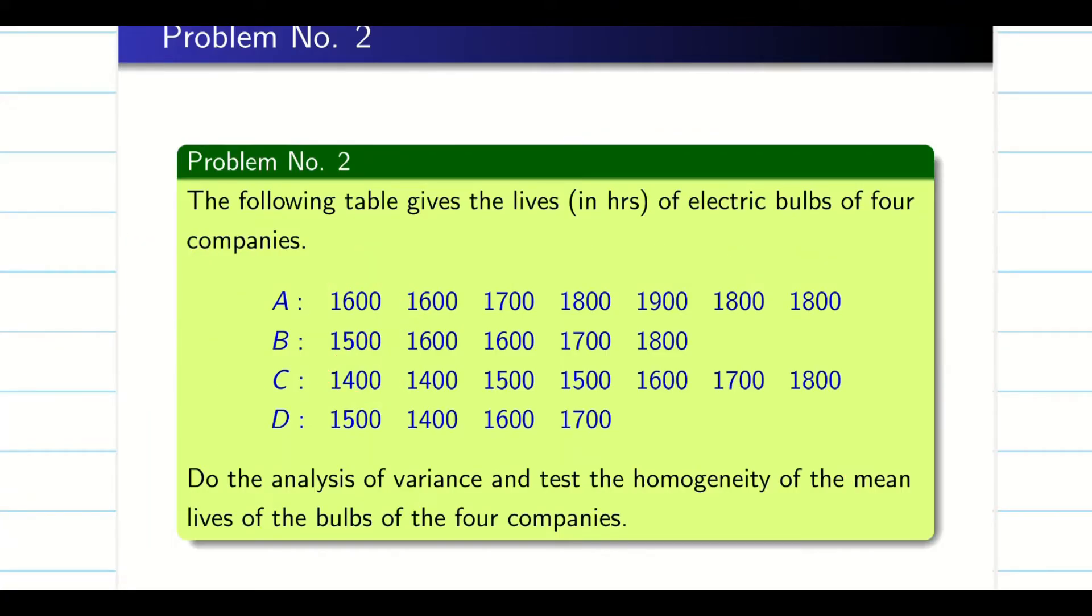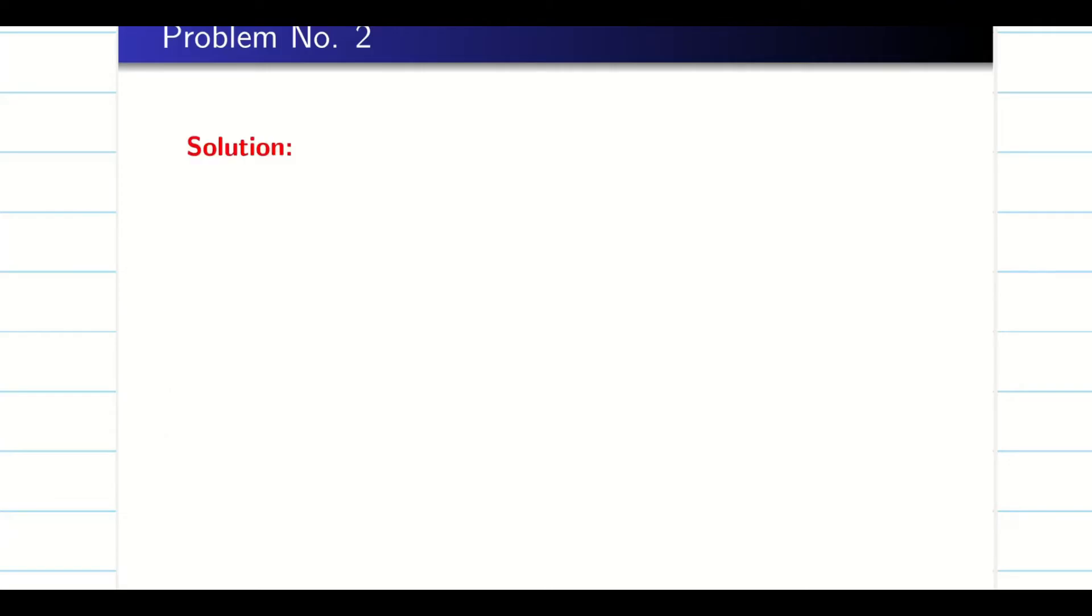Now when we solve the problem, we have to count each column. C1 is going to be 7 here, C2 is going to be 5, C3 is going to be 7 again, and C4 is going to be 4. Now let us go into the problem and solve as usual. Number of columns is 4.